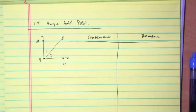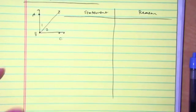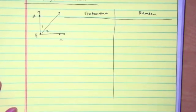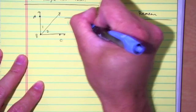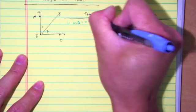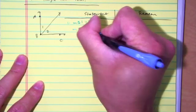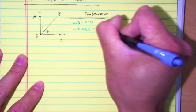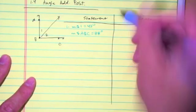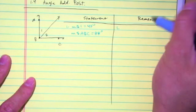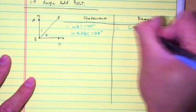Let's go ahead and review this problem using the angle addition postulate with a two-column proof. We won't do two-column proofs until Chapter 2, but exposing you early helps. So the first thing I'm going to do is write down the given information. The given information was: measure of angle 1 equals 42 degrees, and the measure of angle ABC is equal to 88 degrees. Always, always, always reason number 1 is given.